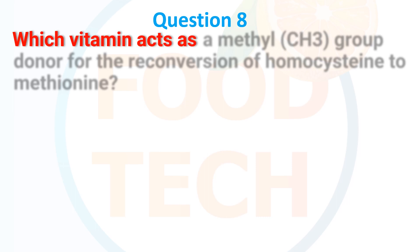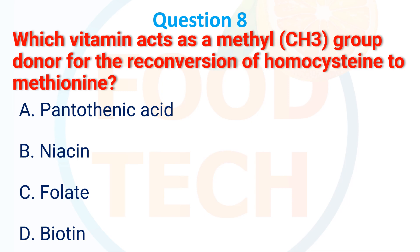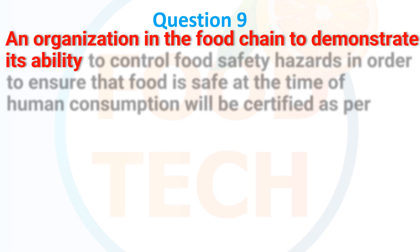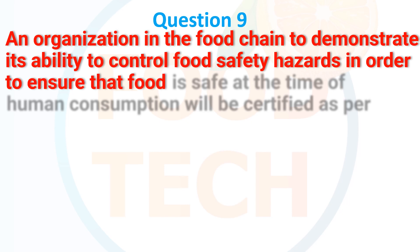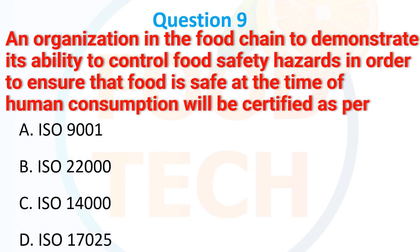Question 7: Which vitamin acts as the methyl group donor for the conversion of homocysteine to methionine? a. Pantothenic acid. b. Niacin. c. Folate. d. Biotin. The correct answer is Coenzyme Q10.